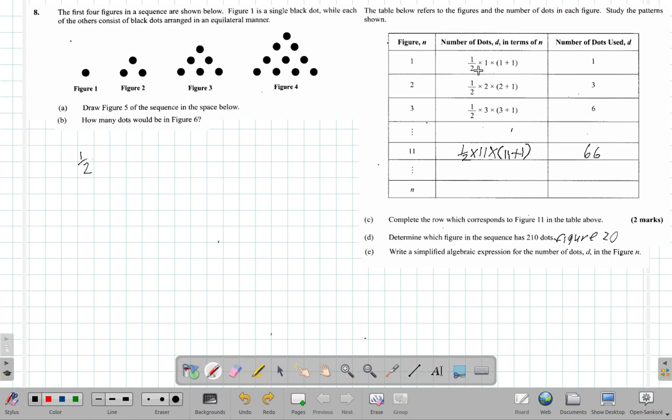Then you have multiplying throughout, so it's half multiply by - in figure 1 it's 1, in figure 2 it's 2, in figure 3 it's 3. Figure 1 is 1 here, figure 2 is 2 here, figure 3 is 3 here, figure 11 is 11. So what do you expect in figure n? n must be n here.